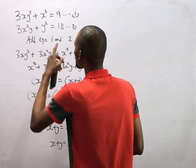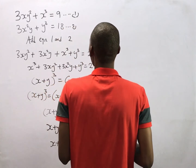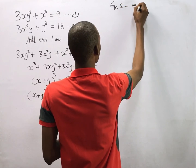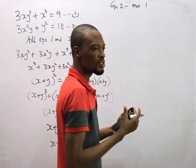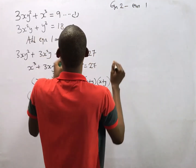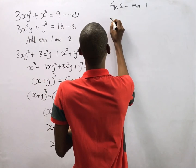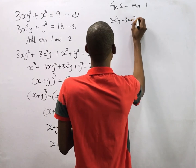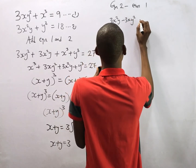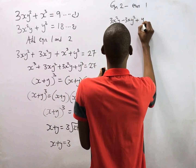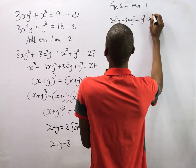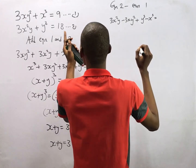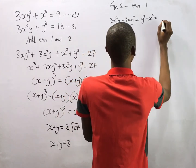Similarly, let us subtract the equations — equation 2 minus equation 1. Subtracting gives 3s²y − 3sy² + y³ − s³ = 18 − 9, which equals 9.